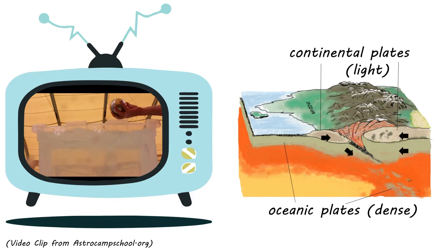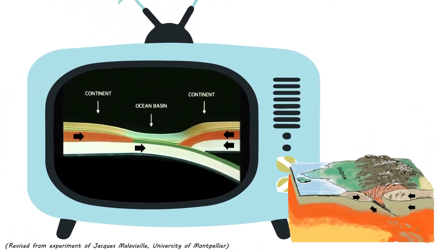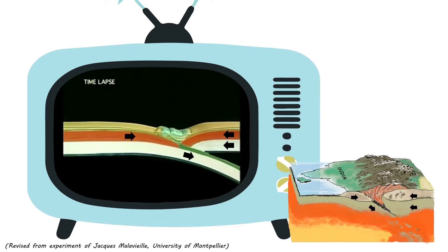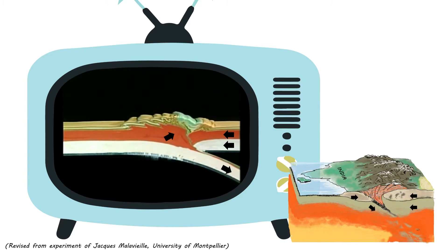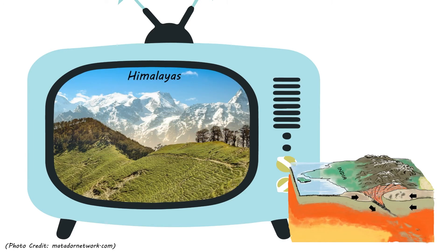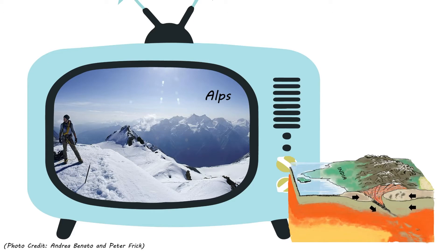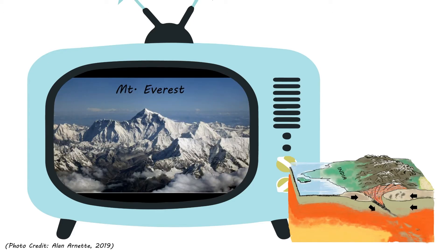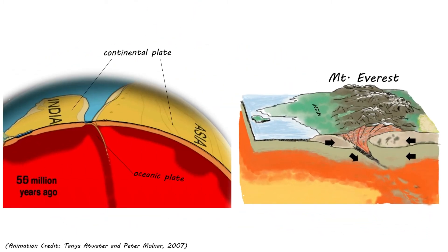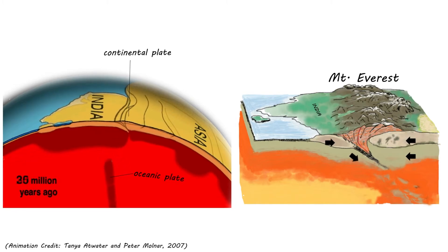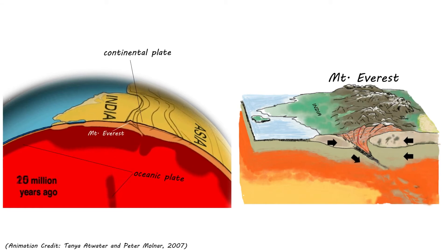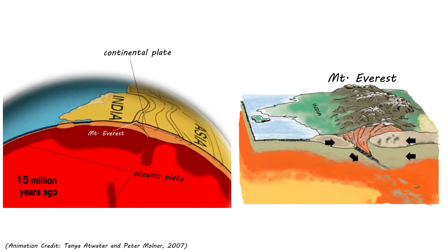Instead of going down, the continental crust literally bunches up, thickening and folding to create spectacular mountain ranges like the Himalayas or the Alps. Mount Everest is the highest mountain in the world and formed as a result of the collision between the Indian and Asian continental plates. These mountain ranges are not only high, but are some of the most beautiful places on Earth.